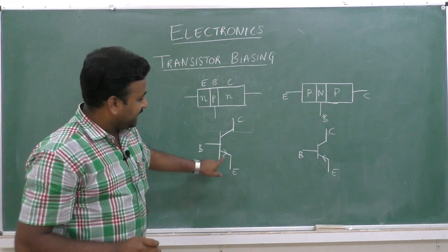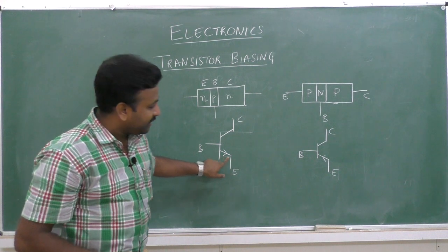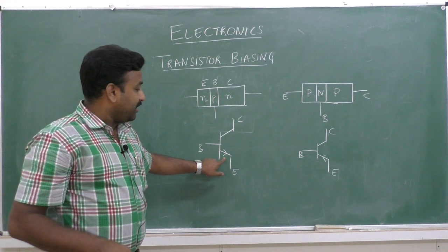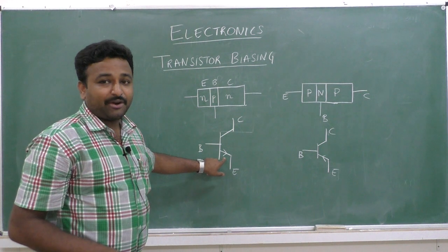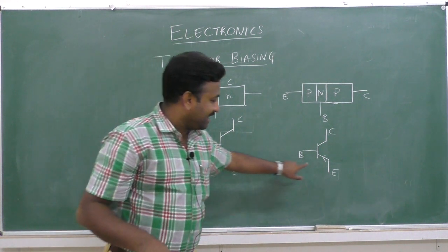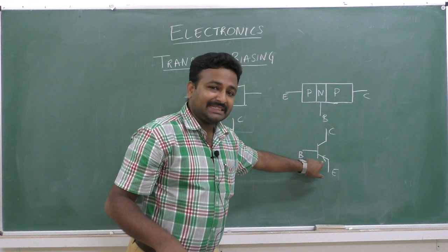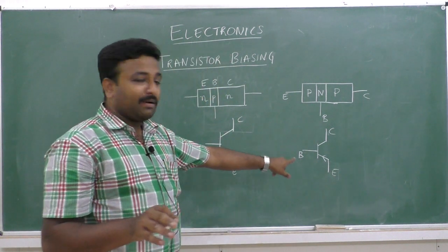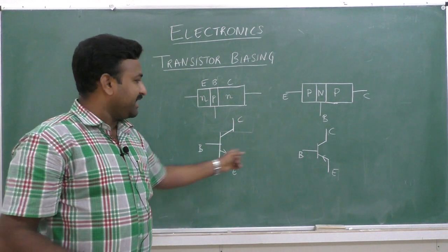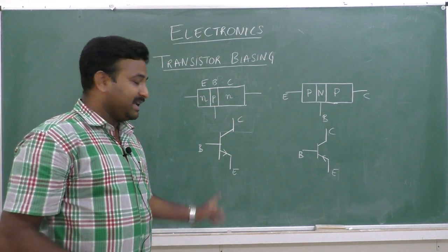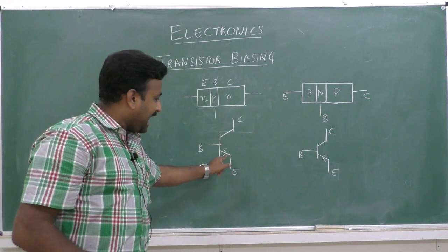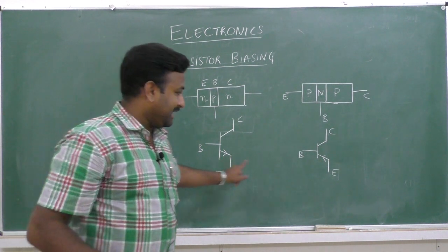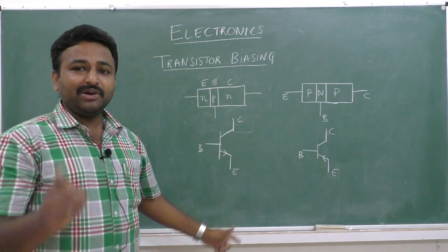In the NPN transistor circuit symbol, the arrow points away from the base towards the emitter region. Whereas in the case of the PNP transistor, the arrow points towards the base region. The arrow symbol represents the emitter. If the arrow points away from the base, it is the NPN transistor. If the arrow points towards the base, it is the PNP transistor.